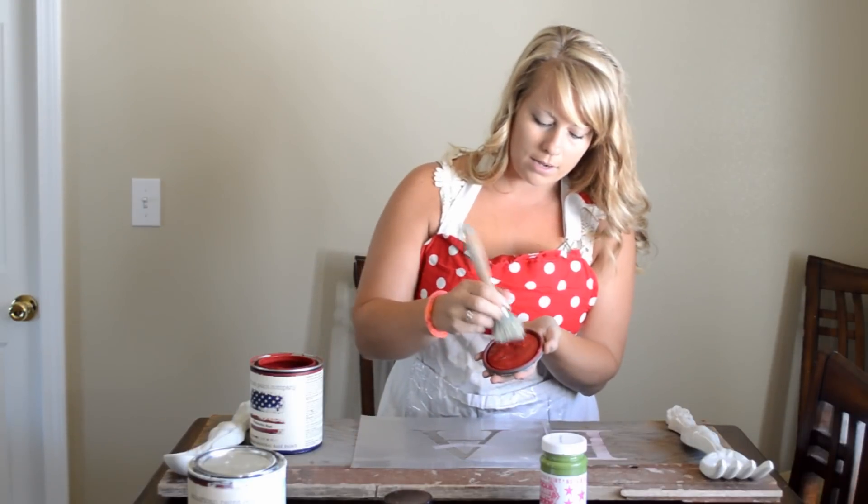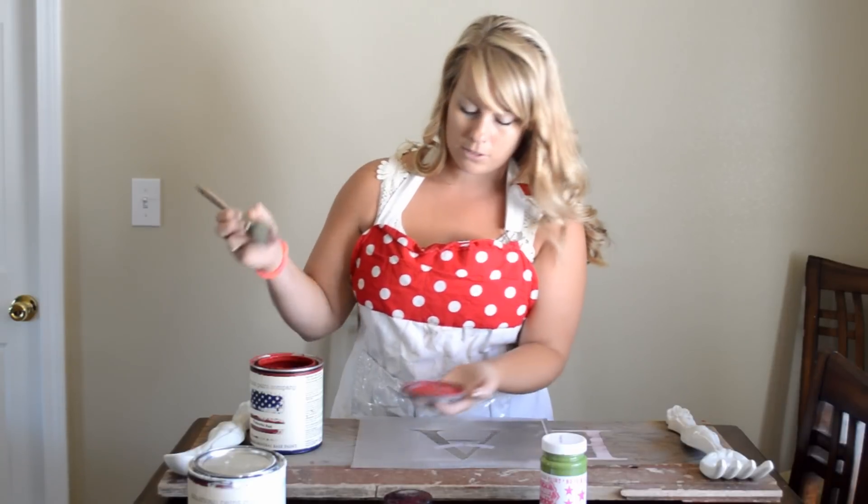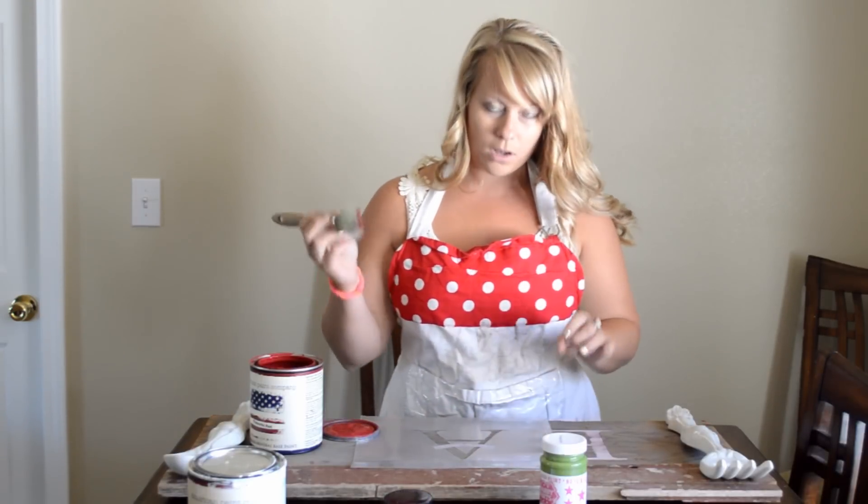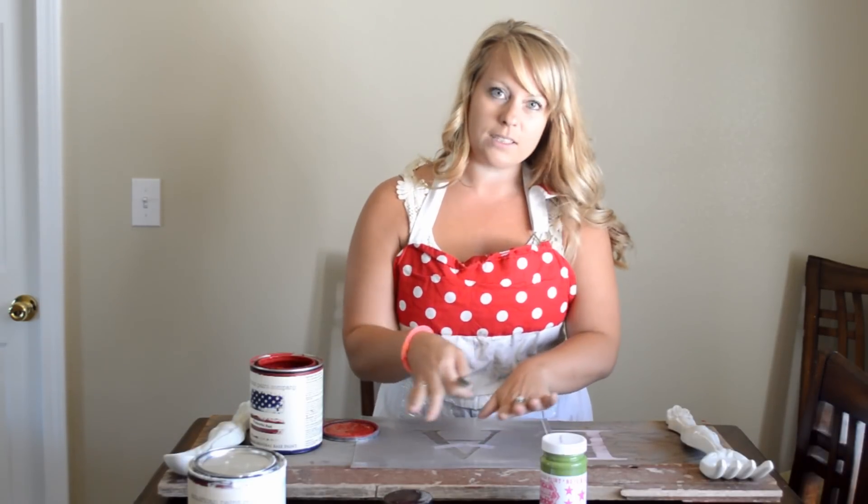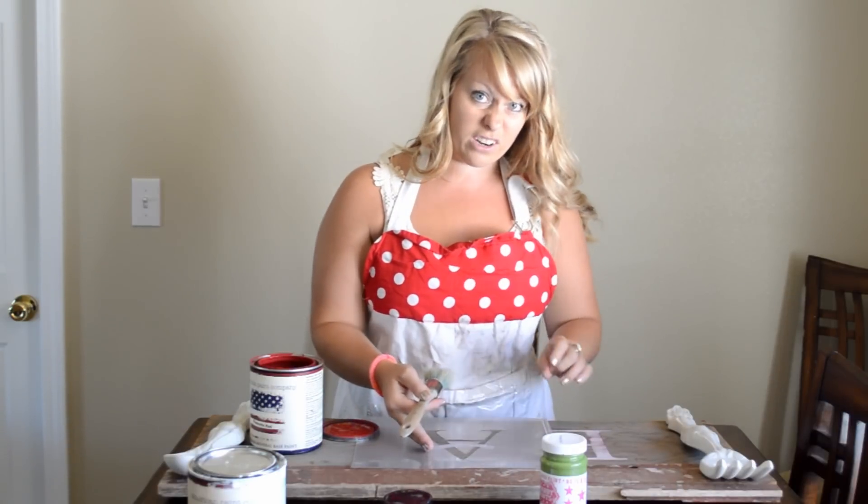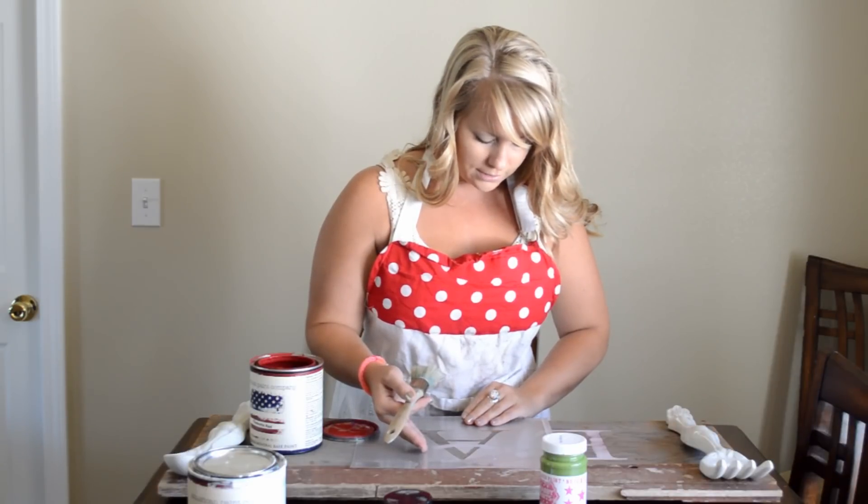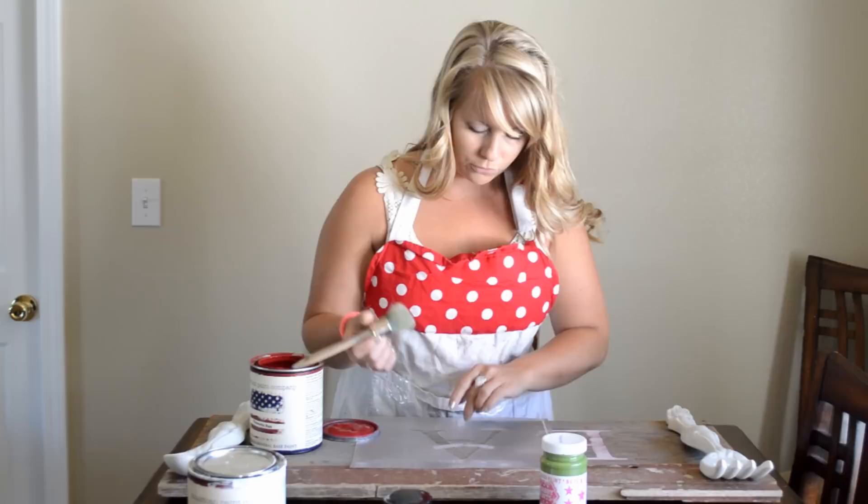I'm just going to dab it on, just a little tiny bit, and even wipe it off a little bit. You don't want globs of paint on here because then it'll seep underneath your stencil and it won't look very good. You're going to have to fix it at that point, so try not to soak your brush with paint.